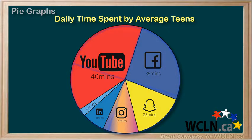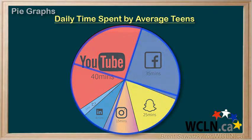If we visualize the circle broken down into quarters, we can see that teens used Facebook a little more than a quarter of the time. Also, Snapchat is being used a little less than a quarter of the time.